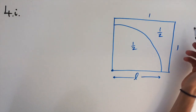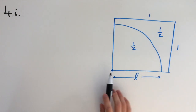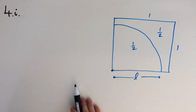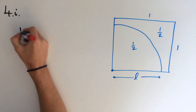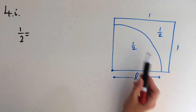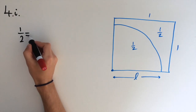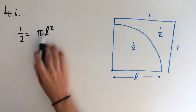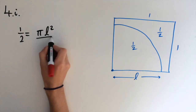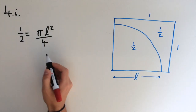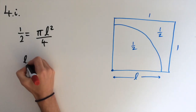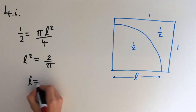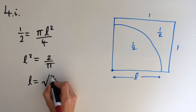I've drawn out the square field with side length 1, so the total area is going to be 1. We need to work out the length of the rope, I've called it L, such that this region here is equal to half the area. This is a quarter of a circle, so we use the area formula: a quarter of pi r squared, which is pi L squared over 4. Multiplying both sides by 4 and dividing by pi, we get L squared equals 2 over pi. Taking the square root, L equals the square root of 2 over pi.